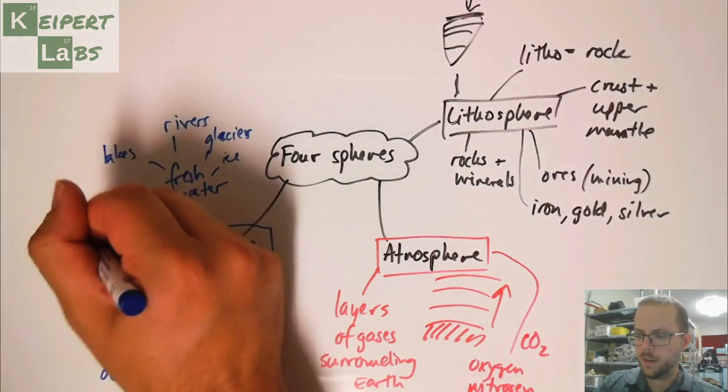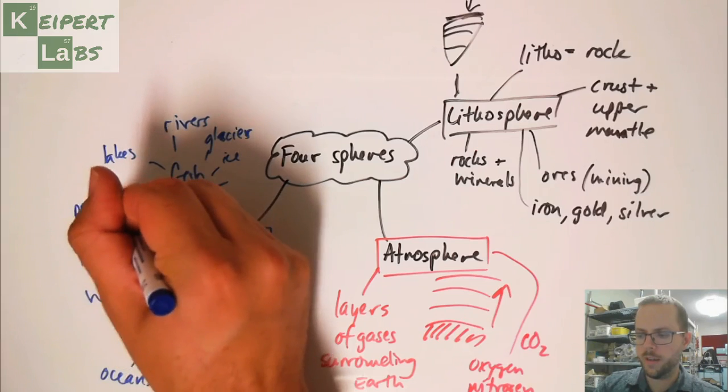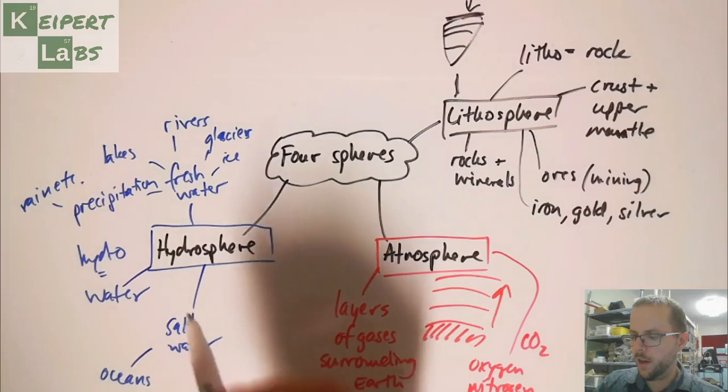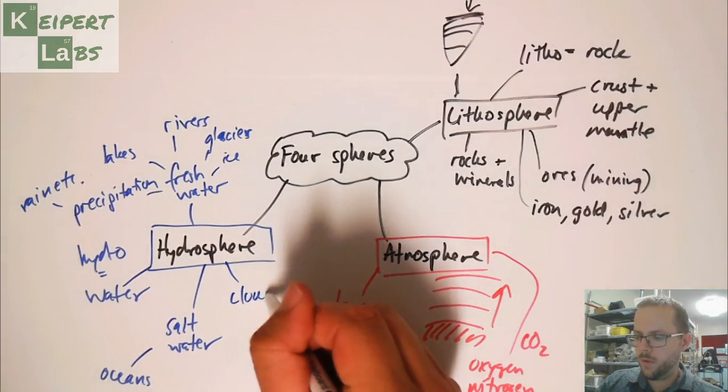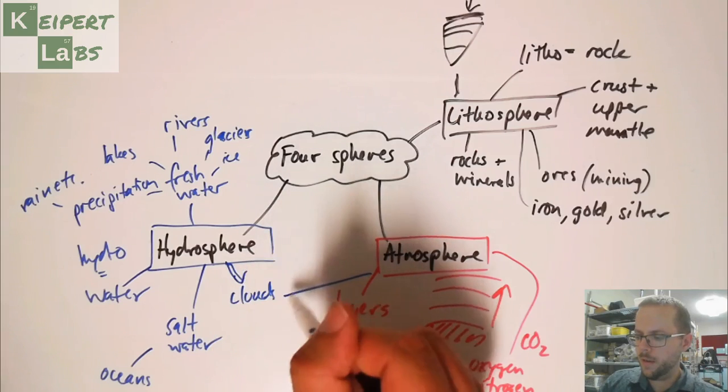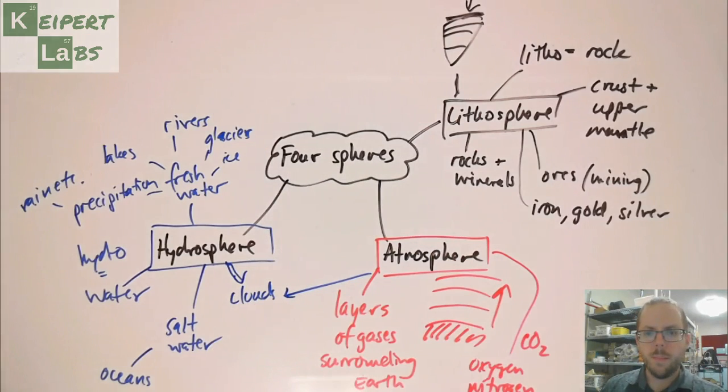We're thinking about it in terms of precipitation, like rain and snow. All of these, because they contain water, are part of the hydrosphere. We've also got clouds, which seem to kind of connect between the two here. Because they are made up of water vapor, but we find them up in the atmosphere.